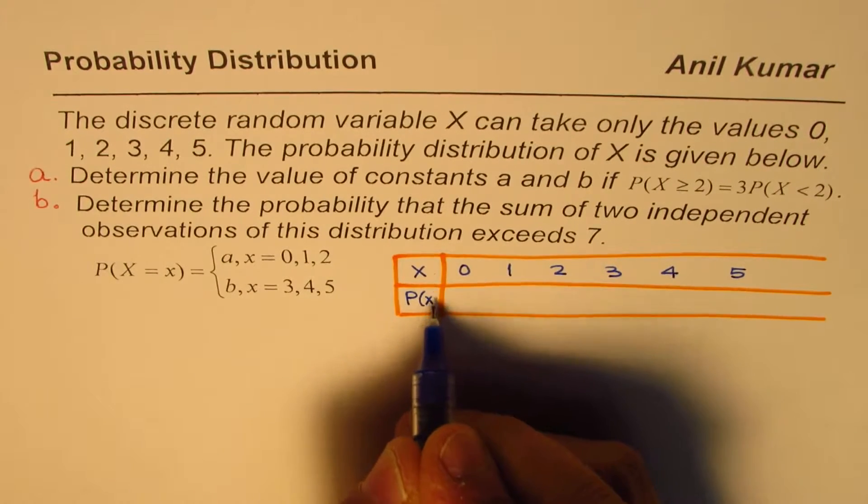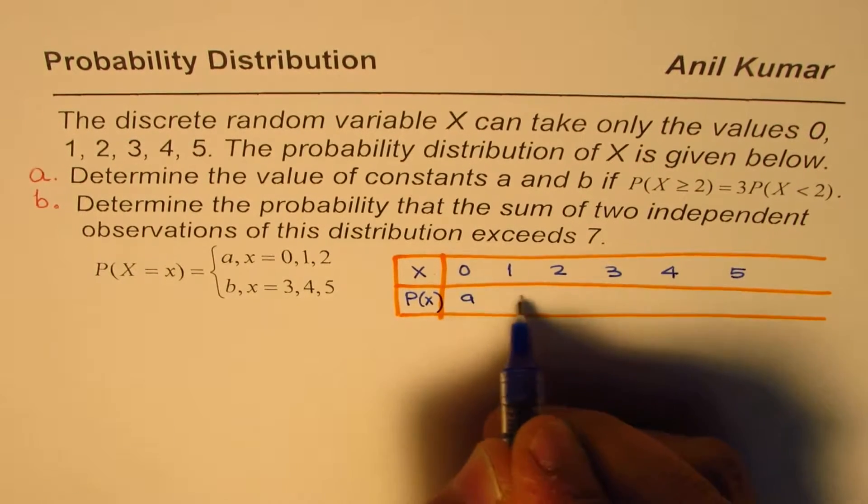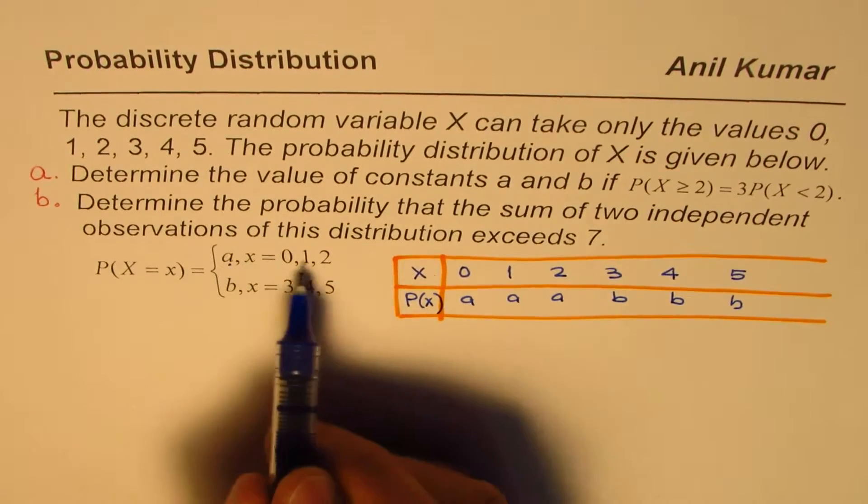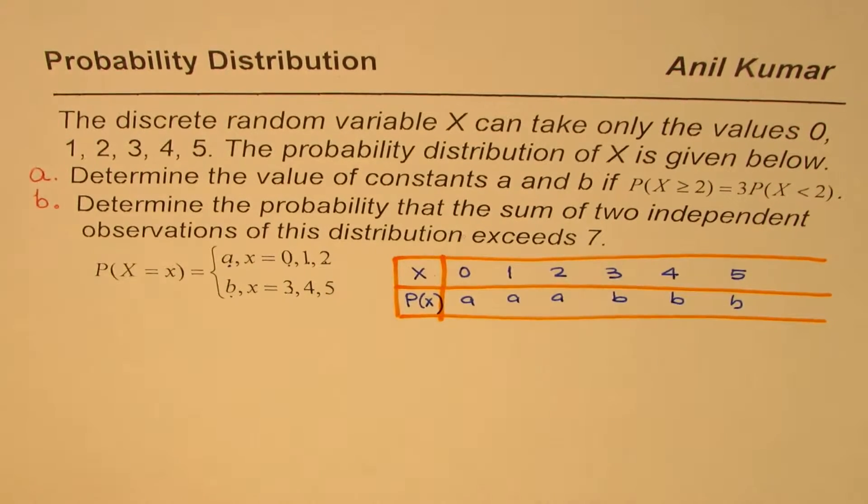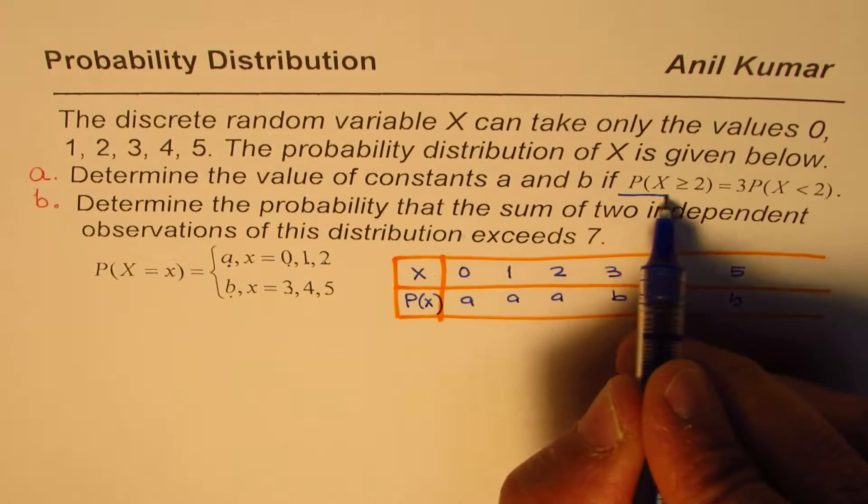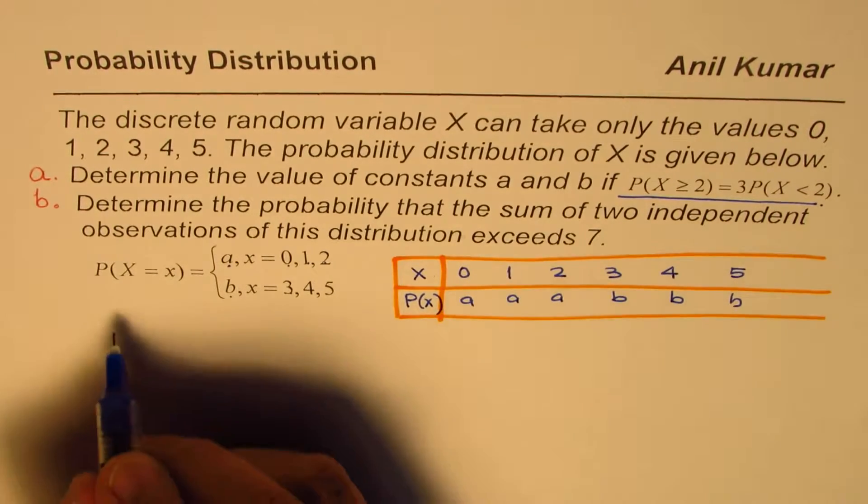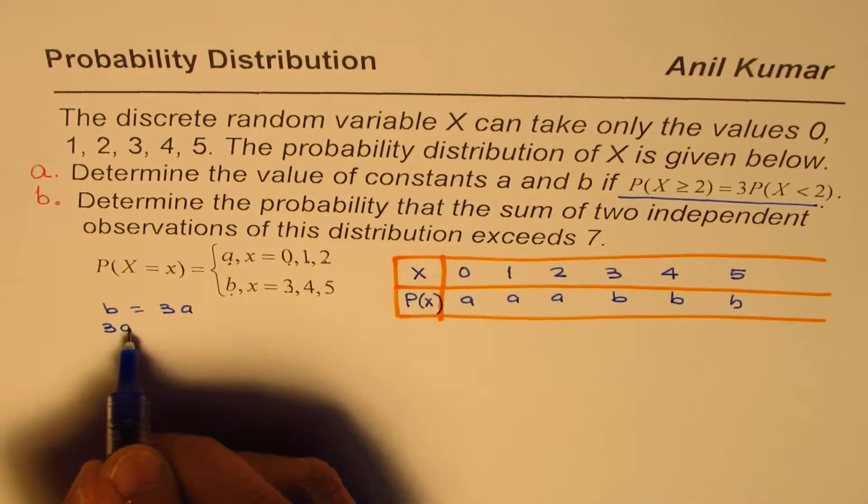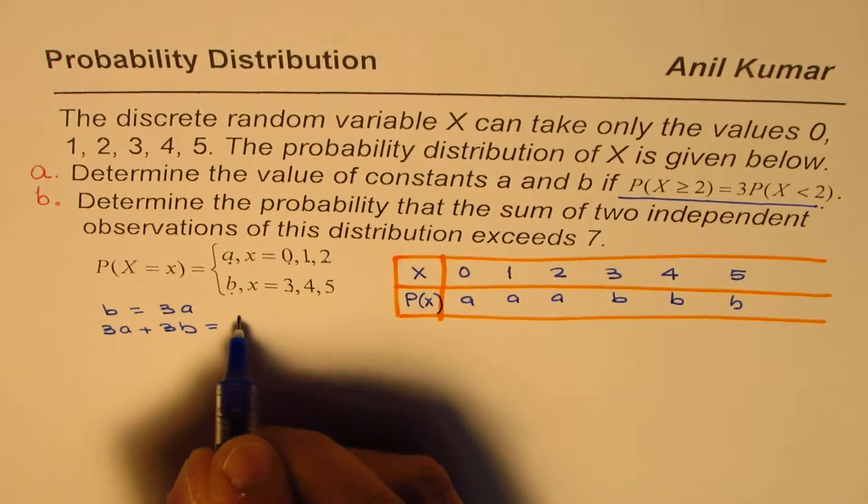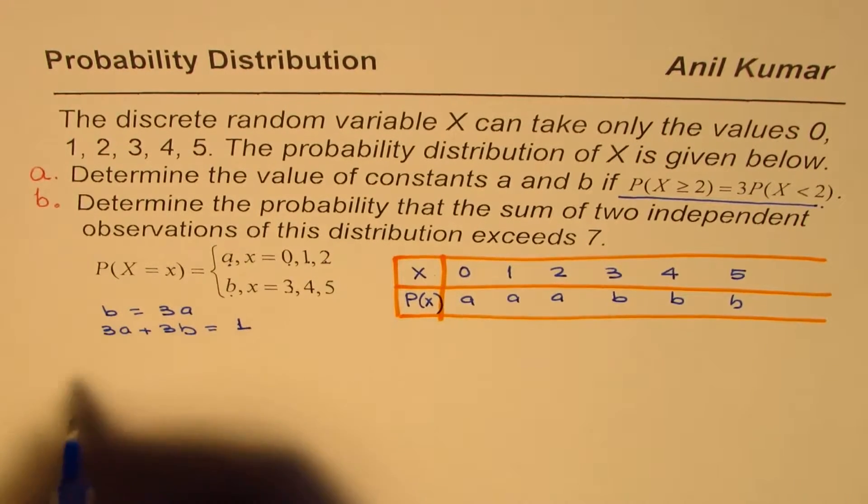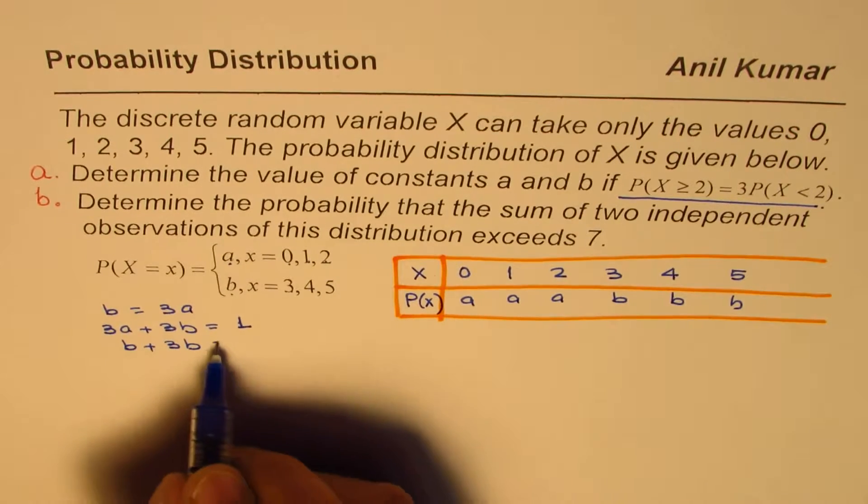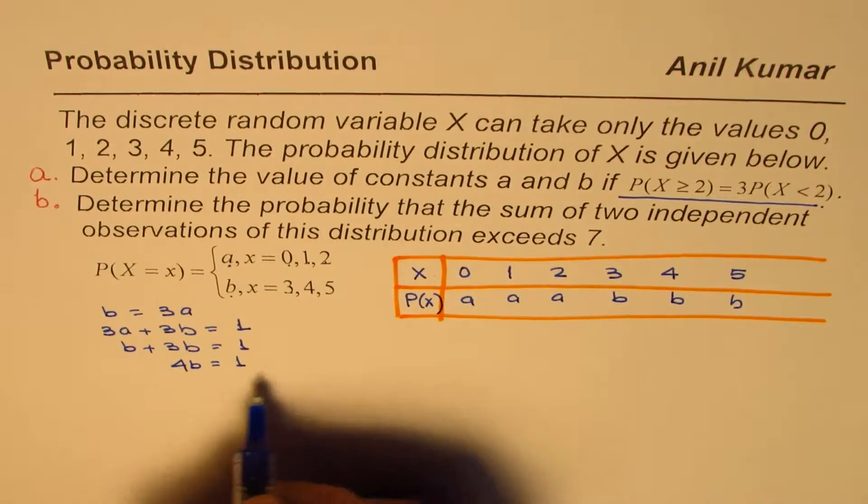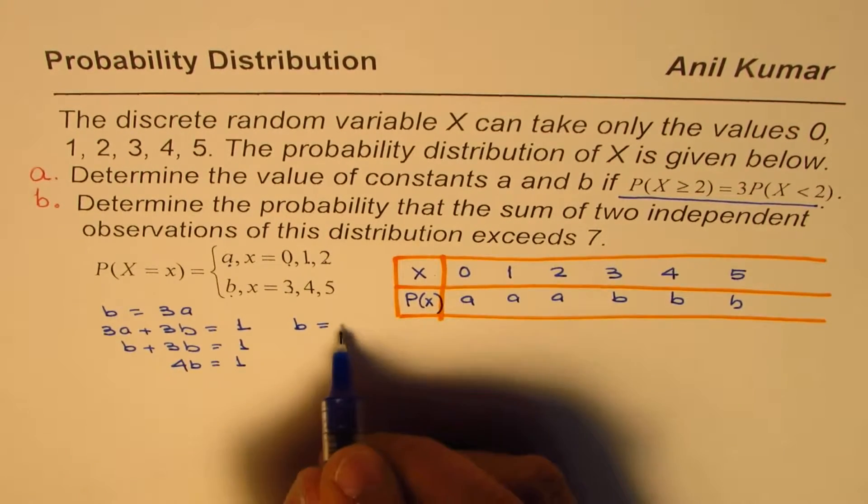And the probabilities for these are A, A, A, or B, B, B. That is from this condition, A for 0, 1, and 2, B for 3, 4, and 5. And in the previous video, from the given condition, we got the equation that B equals to 3A, and from this we have the condition that 3A plus 3B should be equal to 1. 3A is B, so we could write this as B plus 3B equals to 1, or 4B equals to 1.